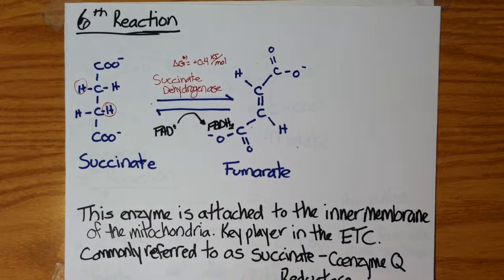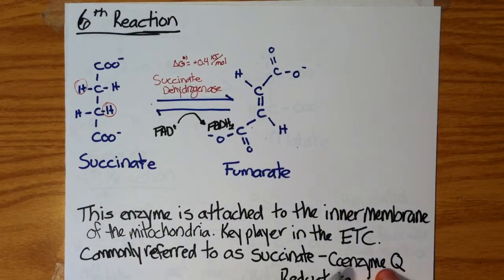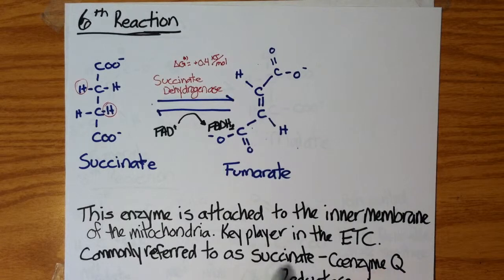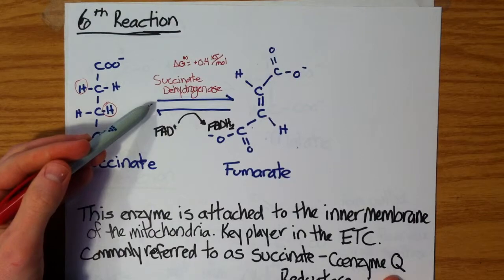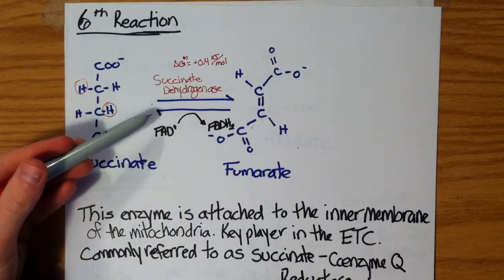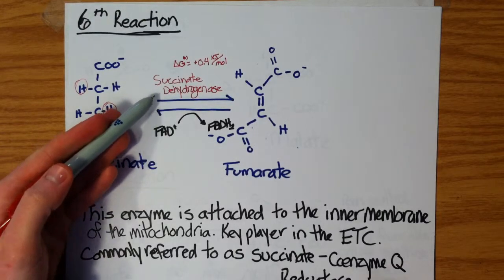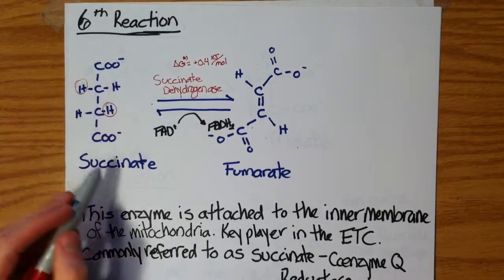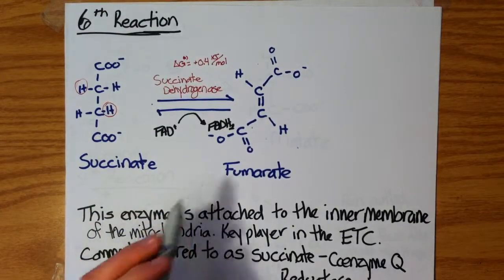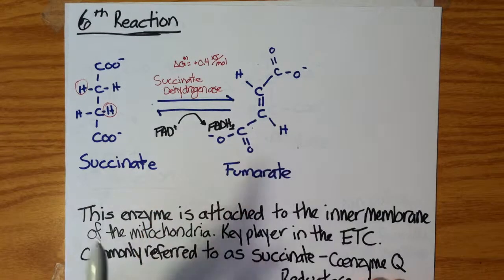When we talk about the electron transport chain, this protein is referred to as succinate-coenzyme Q reductase. But when we're talking about the Krebs cycle, we refer to it as succinate dehydrogenase. I just wanted you to see that this enzyme is dual functional — it converts succinate into fumarate while almost immediately donating its reduced FADH2 electrons into the electron transport chain.